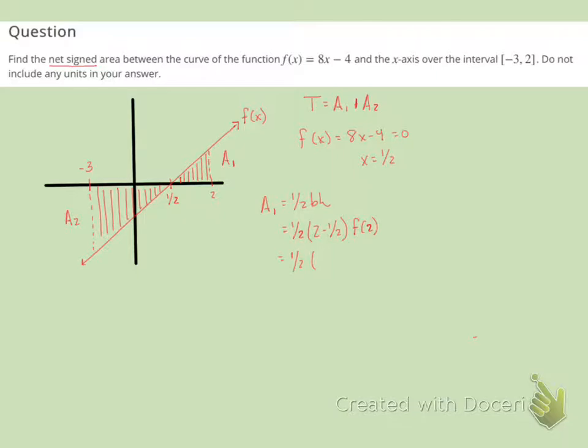So we'll get 1/2. 2 minus 1/2 is 1 and 1/2 or 3/2. And when we evaluate this function at 2, we'll get 8 times 2 minus 4. So we'll get 1/2 times 3/2 times 16 minus 4, which is 12. So let's see, this gives us 36 over 4, which is 9.